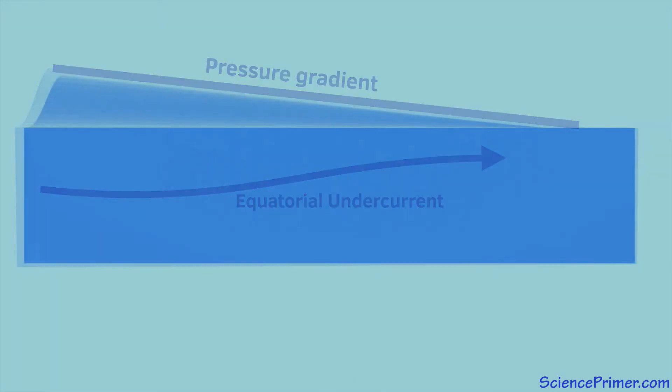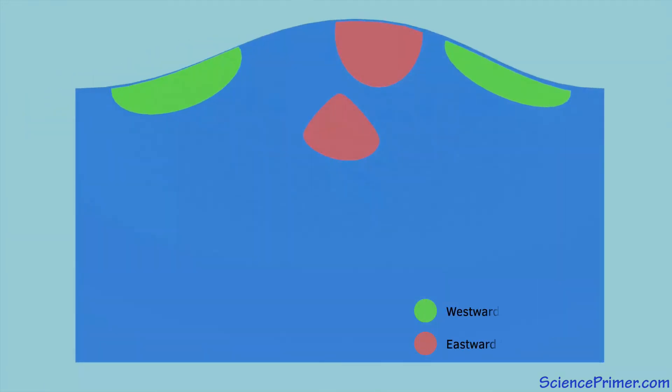Like the equatorial counter current, the undercurrent forms to move water eastward to balance the pressure gradient. While the equatorial counter current flow is north of the equator in the intertropical convergent zone where winds are weak, the equatorial undercurrent flow occurs right on the equator where the southern trade winds are strong enough to create wind shear at the surface, pushing water westward. The presence of these winds and the resulting wind shear prevents eastward flow right at the surface. This pushes the flow to balance the pressure gradient below the surface to the thermocline along the base of the pressure gradient.